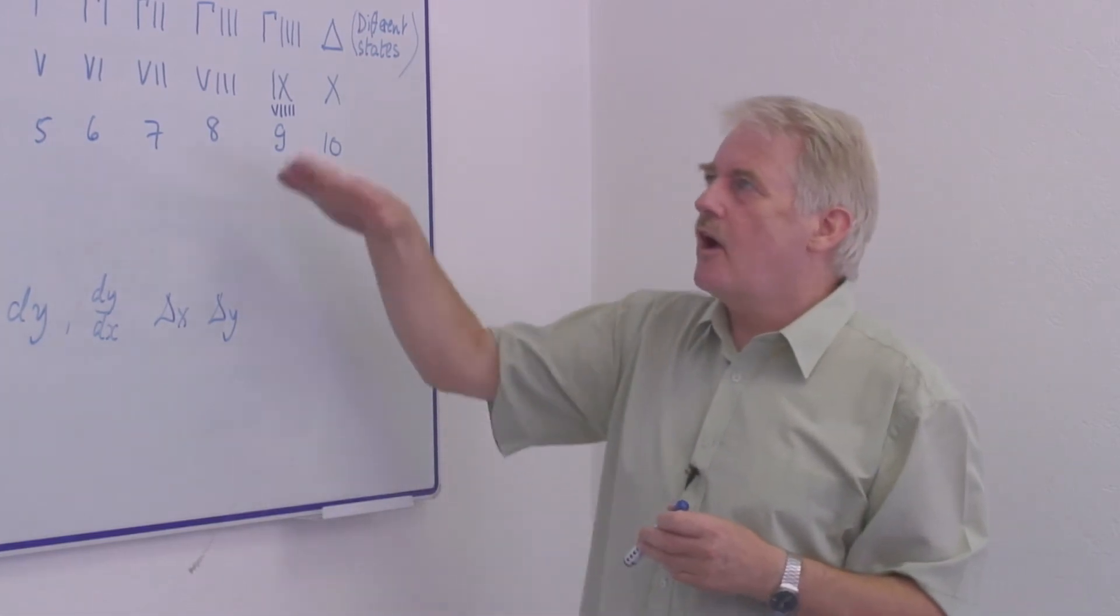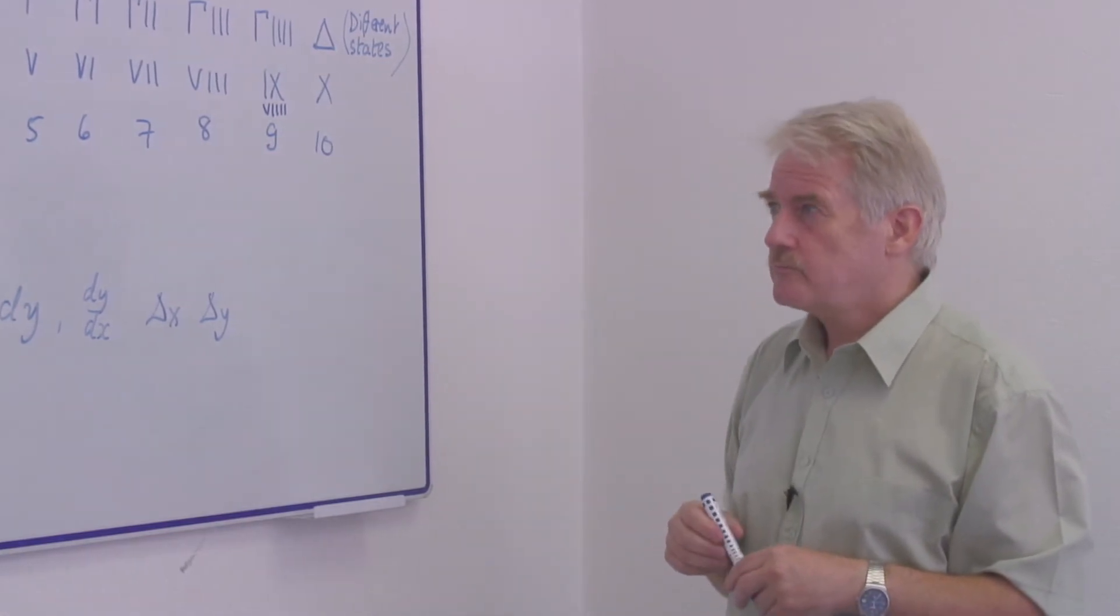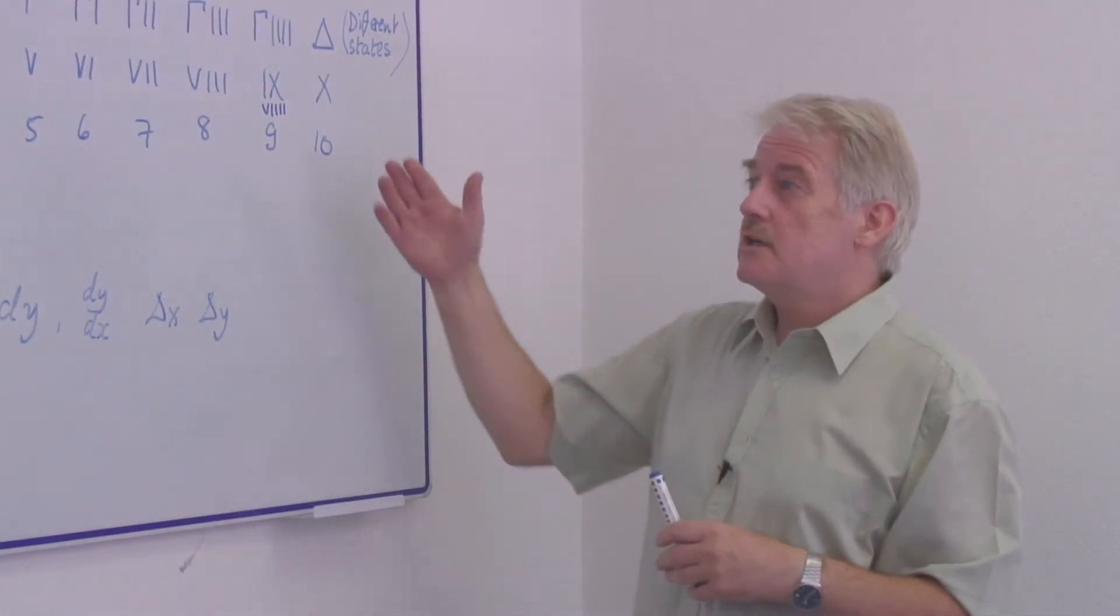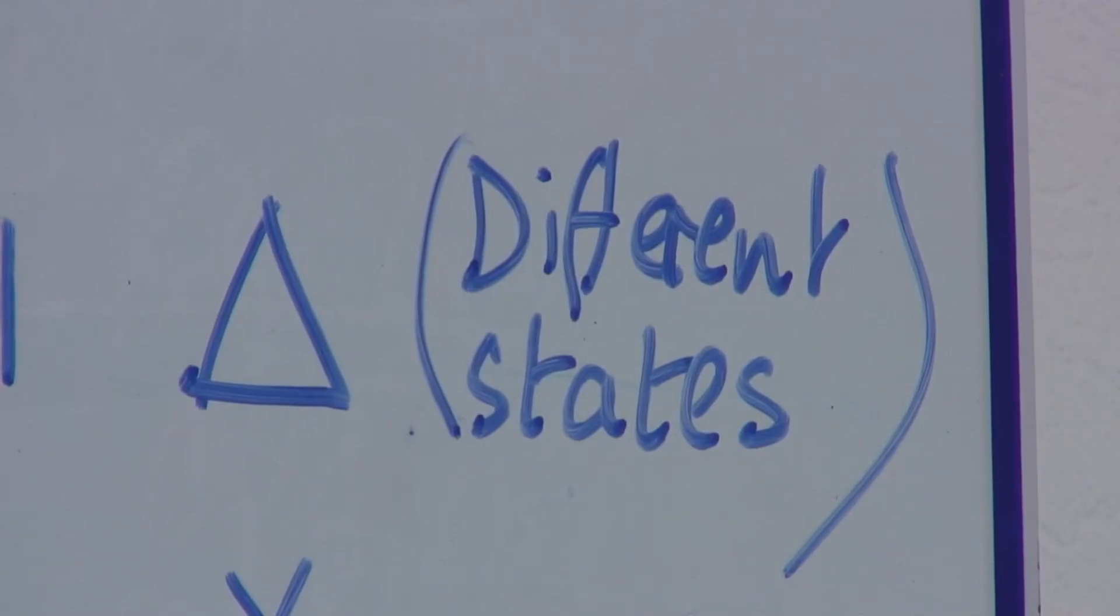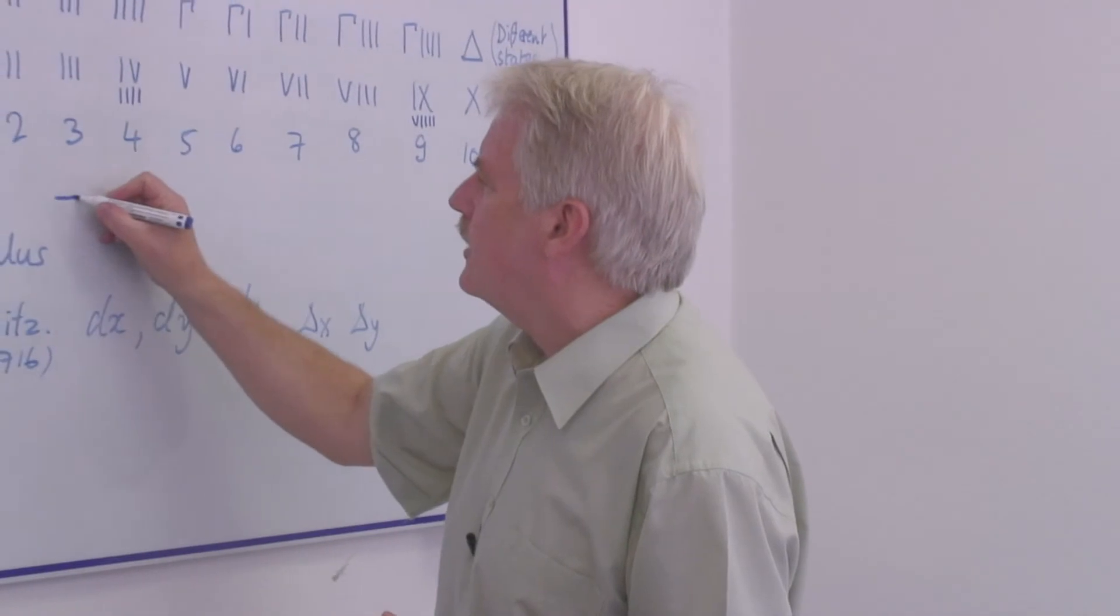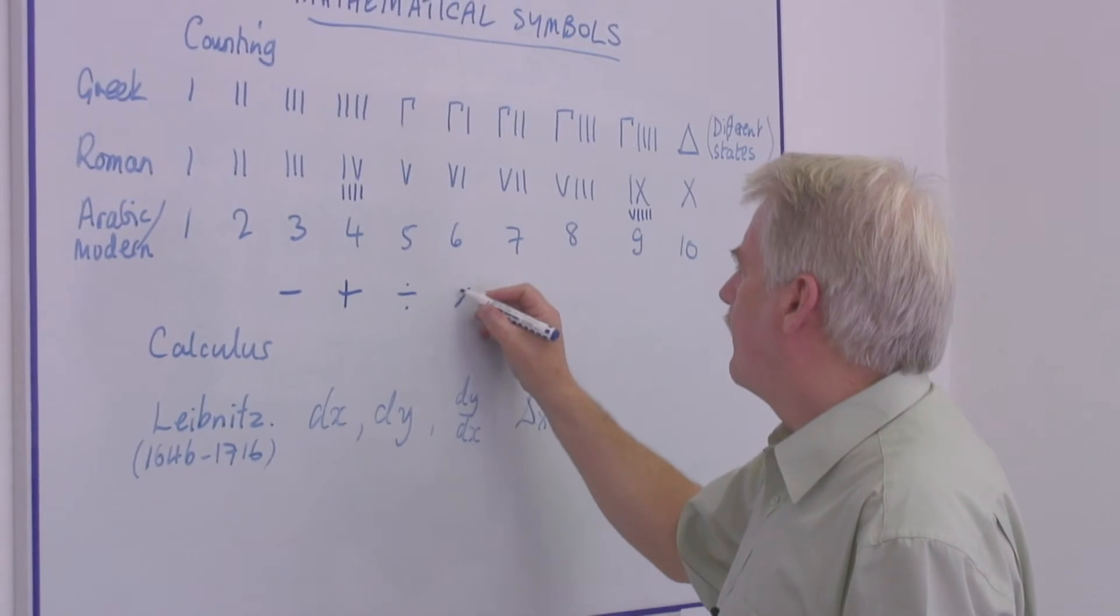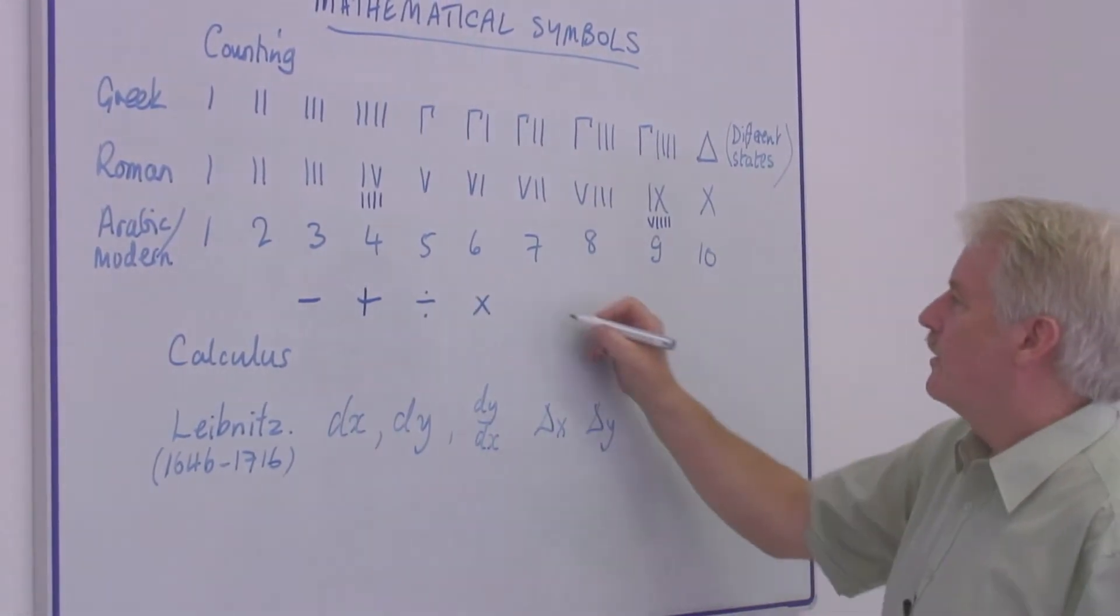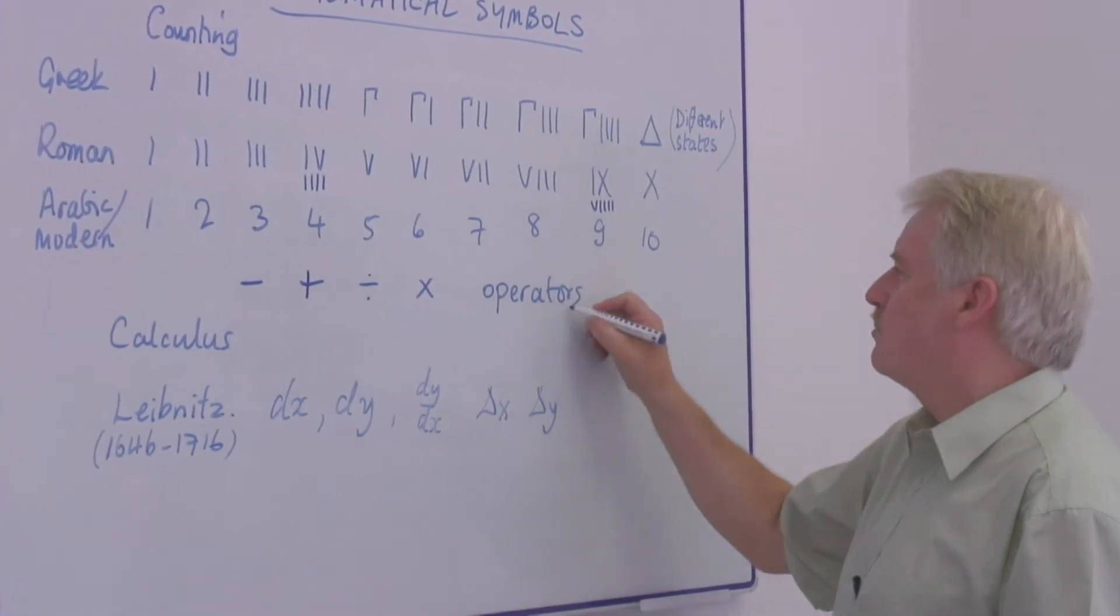But these aren't the only symbols that were used. Obviously we needed symbols to tell us what to do. And some of the important ones are these, which you are probably familiar with. These are the operations symbols or operators.